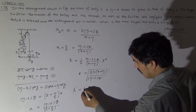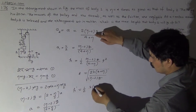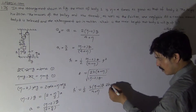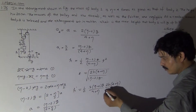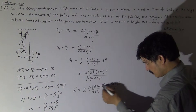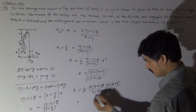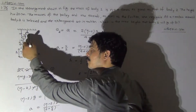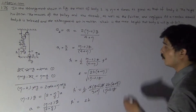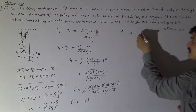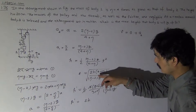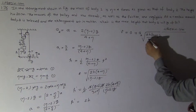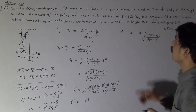During this time, block 2 travels upward with acceleration A2 equals 2(eta minus 2)g/(4 plus eta), covering a distance of 2h. At the moment block 1 hits the ground, the velocity of block 2 is: v equals A2 times t, which equals 2(eta minus 2)g/(4 plus eta) times the square root of 2h(4 plus eta)/[(eta minus 2)g]. This gives the velocity of block 2 at the instant block 1 stops.